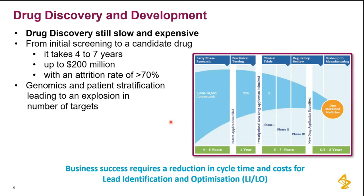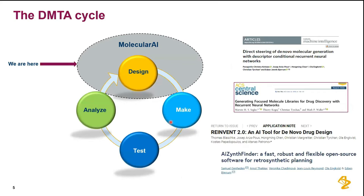To sum up: our business success requires a reduction in cycle time — the DMTA cycle — and costs for the lead identification and optimization phase. You design a new compound set, make it, test it in certain assays, analyze the data, feed what you learn back into the design stage, and iterate. Something good enough is propagated downstream.